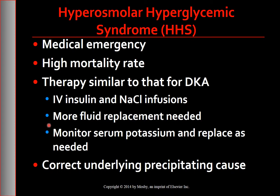Electrolytes are monitored and replaced as needed. Hypokalemia is not as significant in HHS as it is in DKA, although fluid losses may result in milder potassium deficits that necessitate replacement. Assess vital signs, intake and output, tissue turgor, lab values, and cardiac monitoring to check the efficacy of fluid and electrolyte replacement. This includes monitoring of serum osmolality and frequent assessment of cardiac, renal, and mental status. Once the patient is stabilized, attempts to detect and correct the underlying precipitating cause should be initiated.